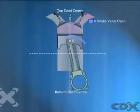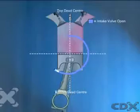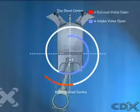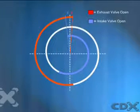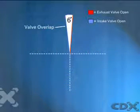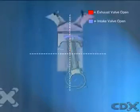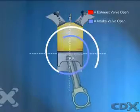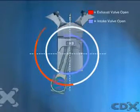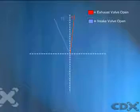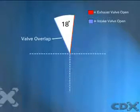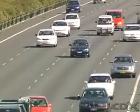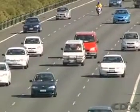Valve overlap is the amount of time the intake and exhaust valves are both open at once. Less overlap produces a smooth idle and more slow speed torque, but poor high-speed performance because there's not enough time for complete scavenging to occur. More valve overlap allows better engine breathing at high speeds, but poor performance at low speeds, rough idling and higher exhaust emissions. Engines with fixed valve timing can only operate most efficiently at one specific speed.